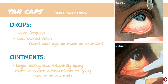Next up is the tan caps — these are the anti-infectives. When prescribing, you have the option of drops or ointments. Drops need to be administered more frequently throughout the day, every couple of hours, because they're absorbed more quickly, but there's a little less blurred vision — they don't coat the eye as much as ointment does, so they might be better for adults. Ointments last longer so you don't have to apply them as frequently; they can be useful in kids or infants where you just pull the eyelid down, smear it on the lower lid, and when the kid blinks it spreads the ointment around.